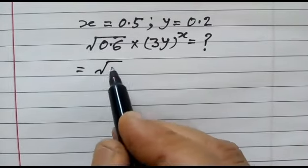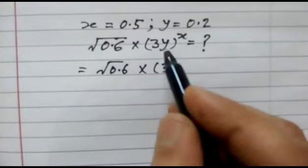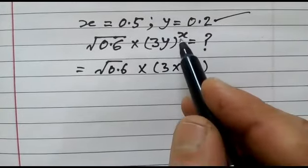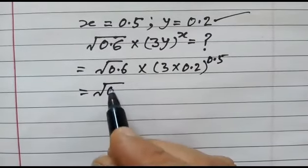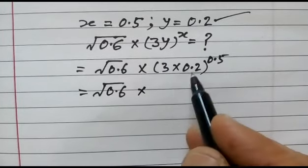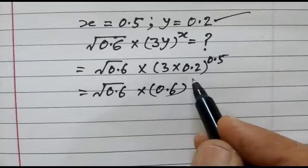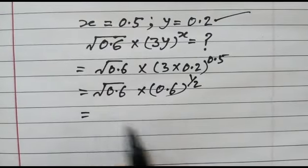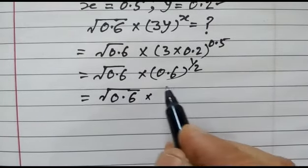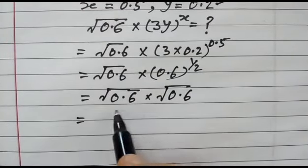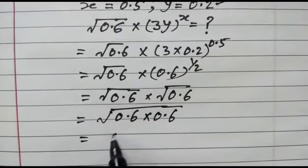0.6 into 3 into y, that is 0.2, whole power x, that is 0.5, which is the same as the half power. So, square root of 0.6 into square root of 0.6, and 0.6 into 0.6 is equal to 0.6.